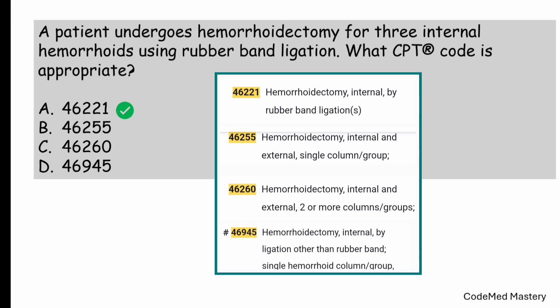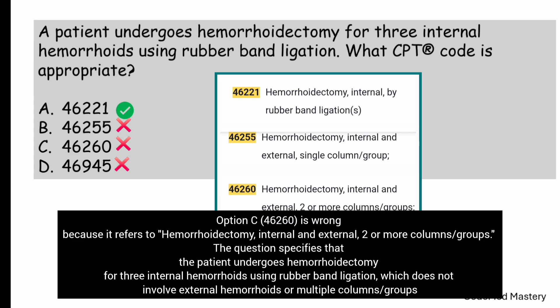Let us check option B, 46255 — it is for hemorrhoidectomy internal and external, single column or group. But in the question they have given hemorrhoidectomy internal, not external, and it is for three internal hemorrhoids, while 46255 is for single column. Therefore we cannot use that code. Option D, 46945, is for hemorrhoidectomy internal by ligation other than rubber band. But in the question they have given rubber band ligation, so we cannot use the other-than-rubber-band code. Therefore eliminate option D. The right answer is option A. Next question.